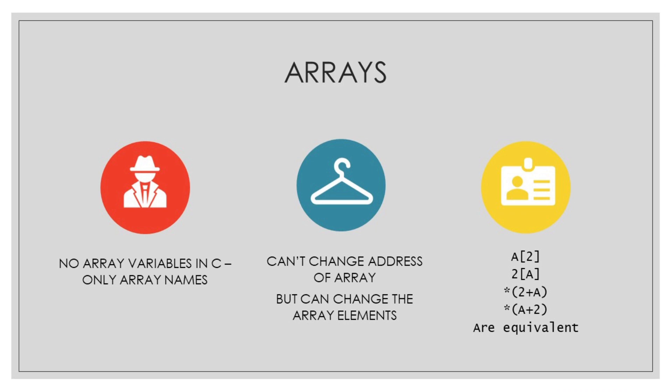So what we have understood by now is that there are no array variables in C, only array names. Array is a name which is basically a combination of multiple elements put together. We cannot change address of array but we can change the array elements.